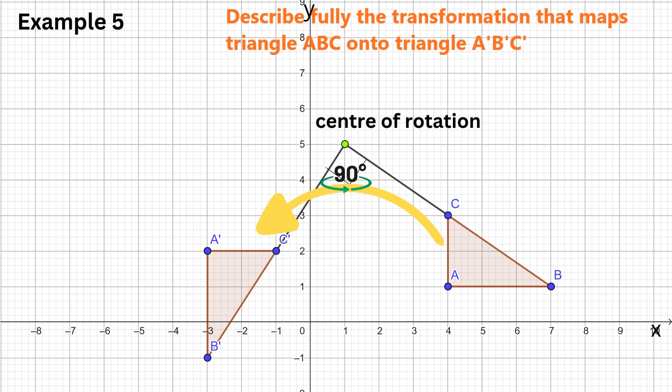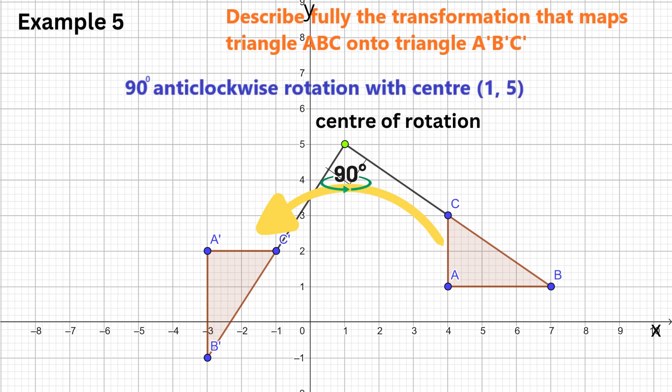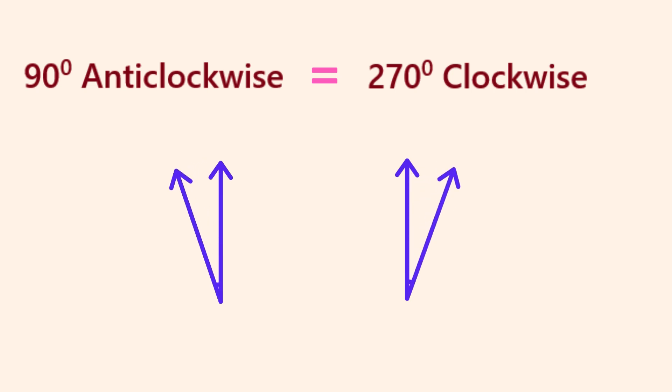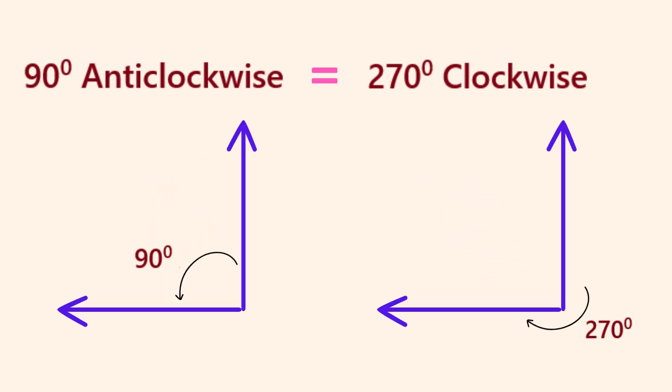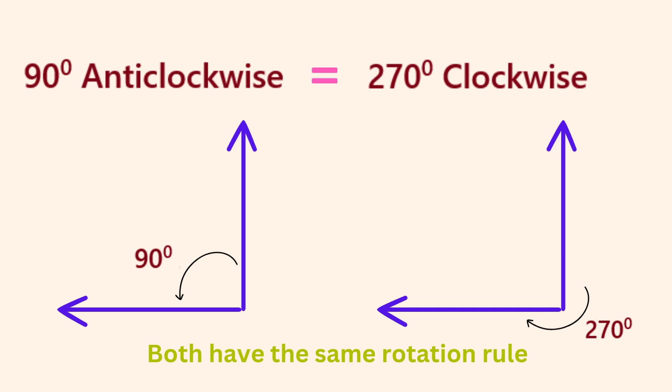So the direction of the rotation is anticlockwise. Hence, the full description of the rotation is a 90-degree anticlockwise rotation with center (1, 5). By the way, a rotation of 90 degrees counterclockwise is the same as a rotation of 270 degrees clockwise — both bring the object to the same final position.